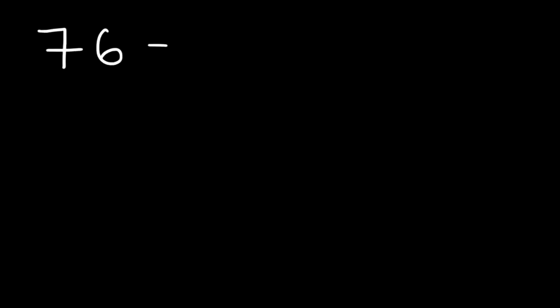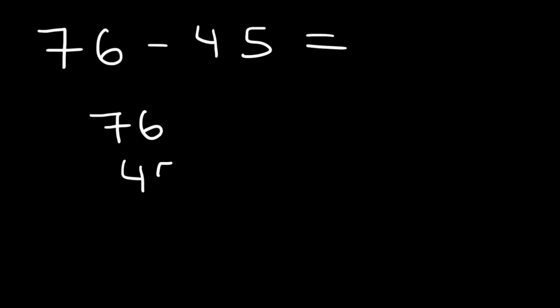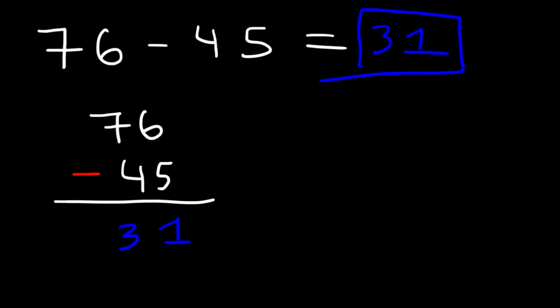How can we subtract two large numbers? Let's say if we want to find the value of 76 minus 45. First, rewrite it lined up, then subtract. 6 minus 5 is 1, and 7 minus 4 is 3. So 76 minus 45 is 31.